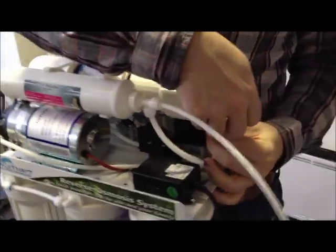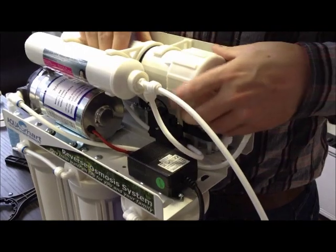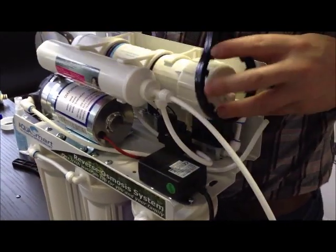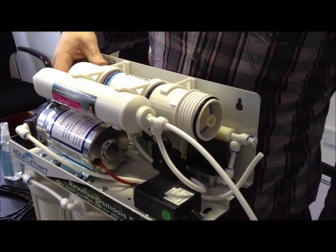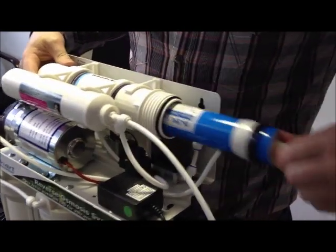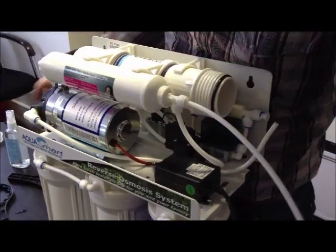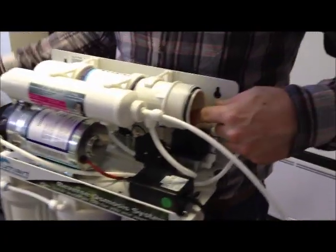Every two years, you need to replace the reverse osmosis membrane. Remove the tubing from the end of the membrane housing. Remove the cap from the end of the housing. Remove the old membrane. Clean the housing with a cloth and sanitize with a disinfectant.